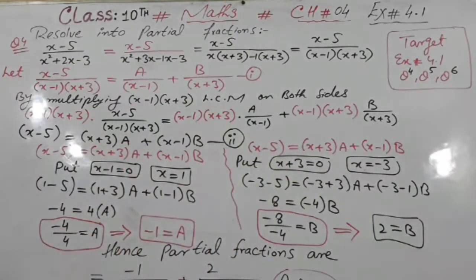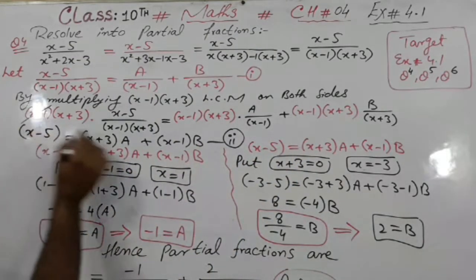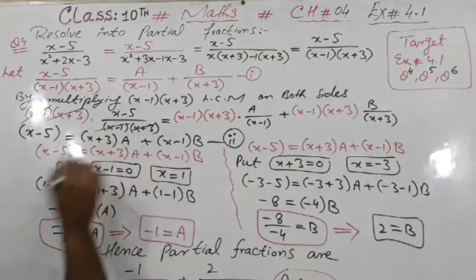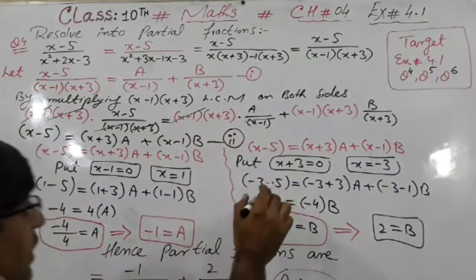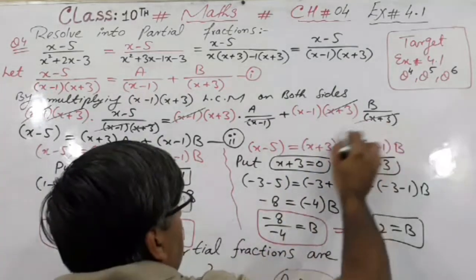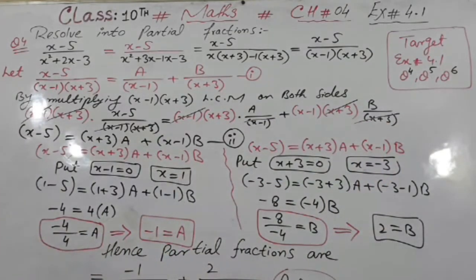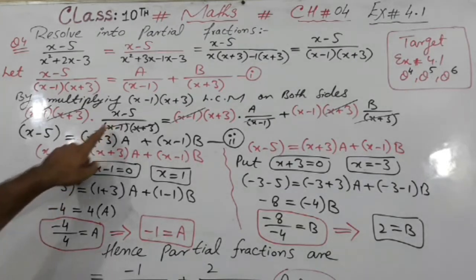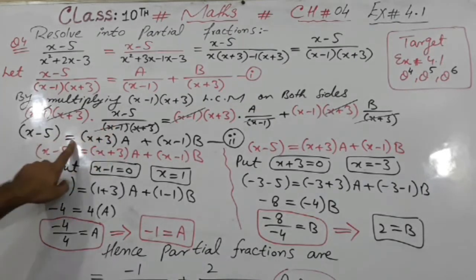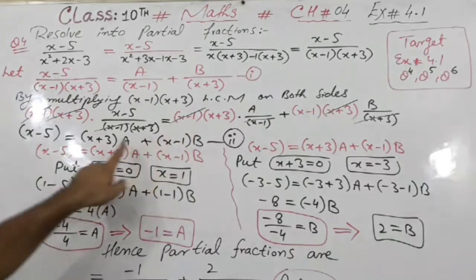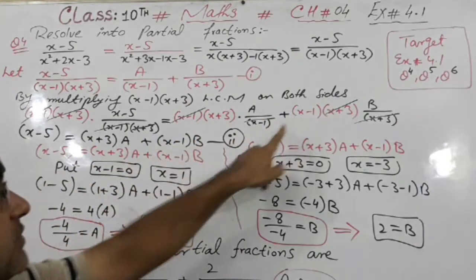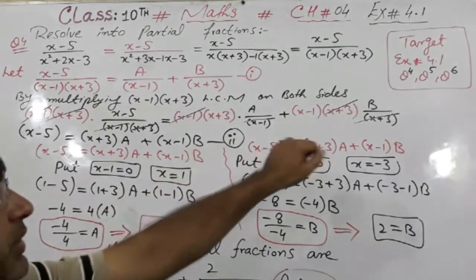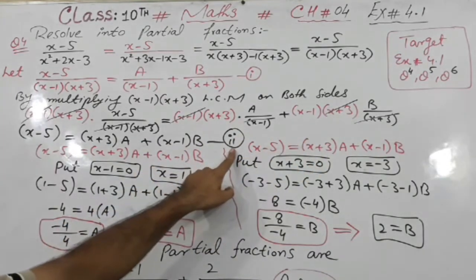We have multiplied here, so x minus 1 cancels, x minus 3 cancels here; x minus 1 cancels and x minus 3 cancels there. So students, what remains is: x minus 5 equals A times (x minus 3) plus B times (x minus 1). This is our equation number 2.